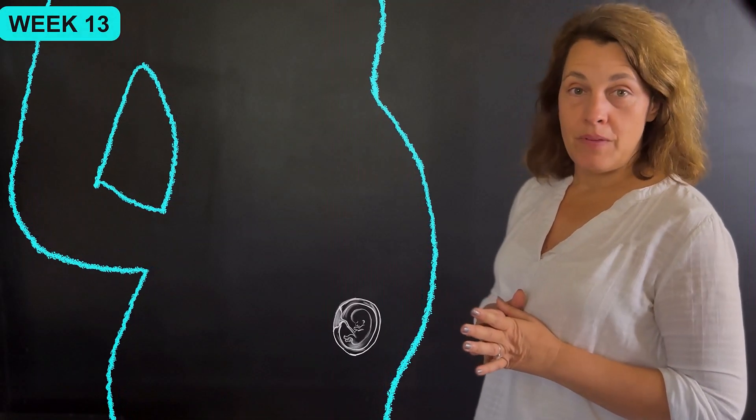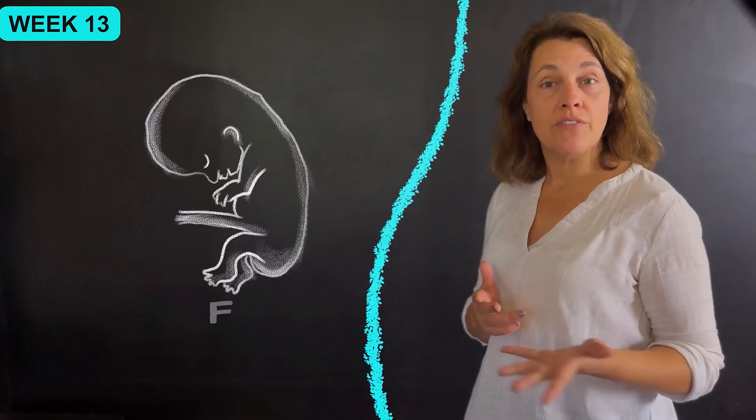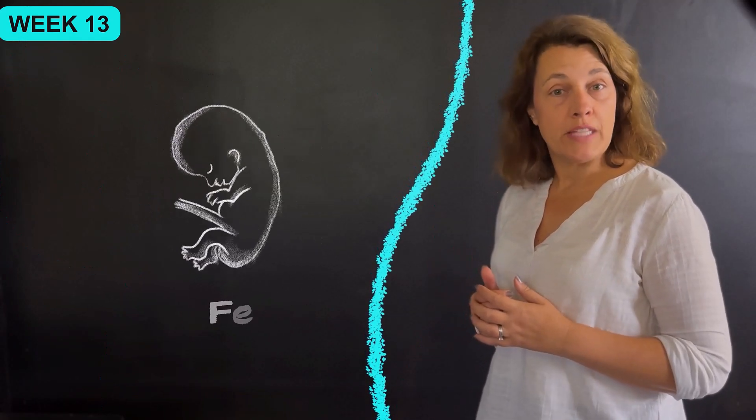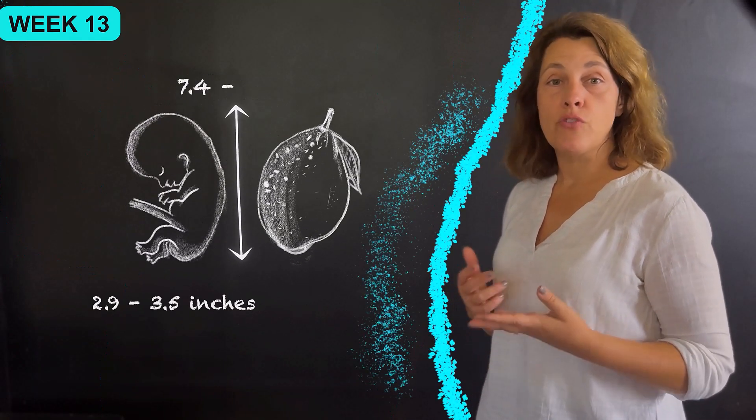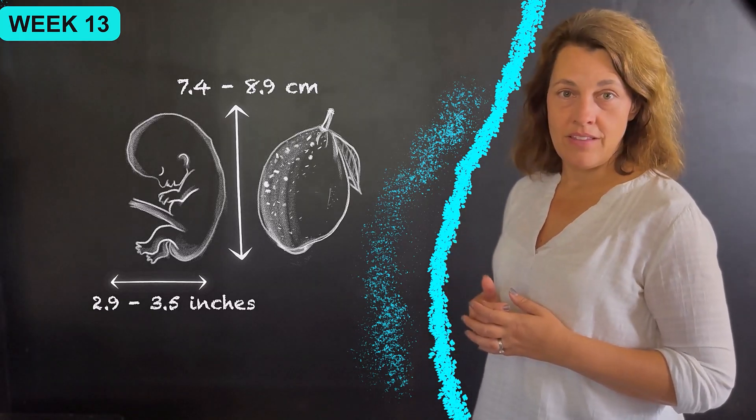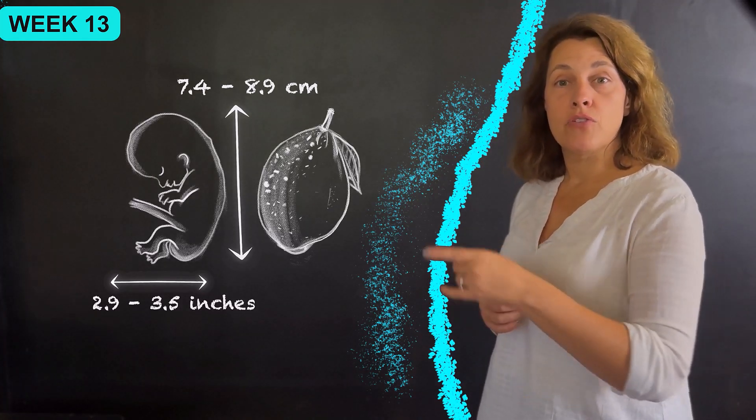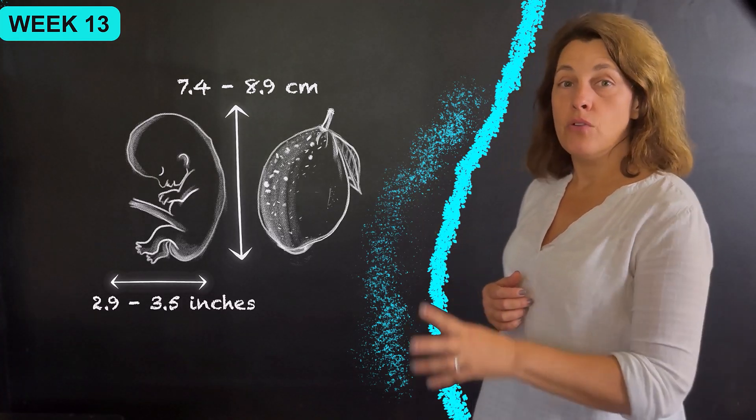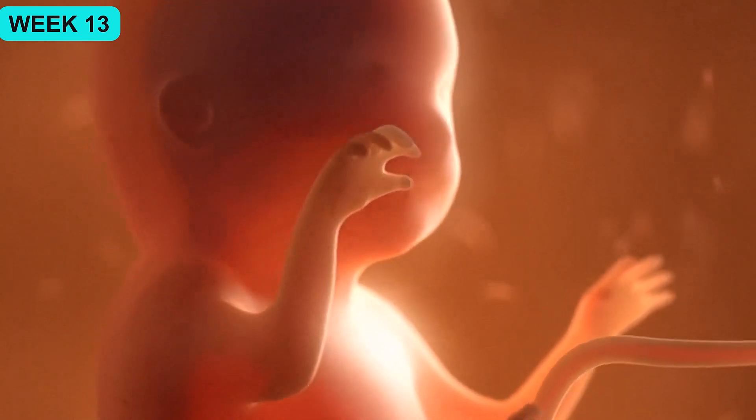What's happening with baby's development this week? The baby, which is called a fetus at this point, is about the size of a lemon, measuring about 2.9 to 3.5 inches or 7.4 to 8.9 centimeters in length. At this point, at the end of the first trimester, the fetal bones continue to harden and cartilage is becoming bone.